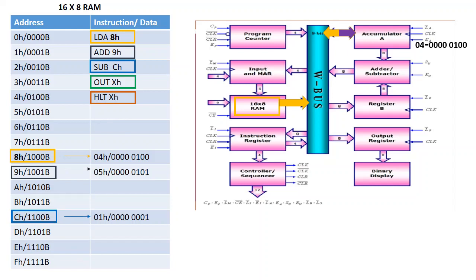The data 05H is sent from RAM and loaded into register B, so register B now holds 05H. Accumulator A holds 04H and register B holds 05H. The ALU is triggered and performs the addition.